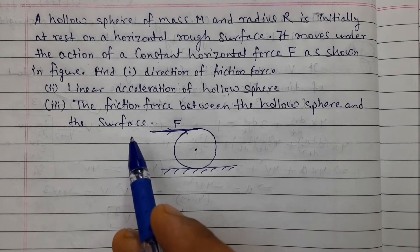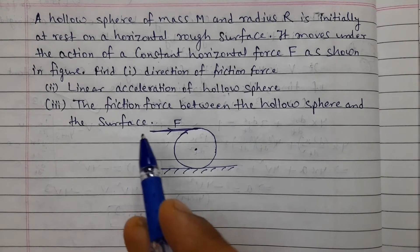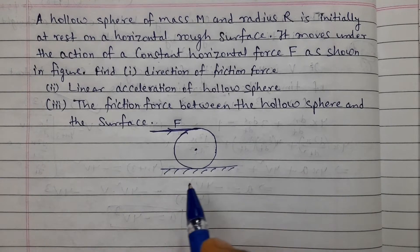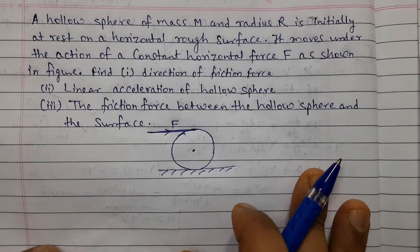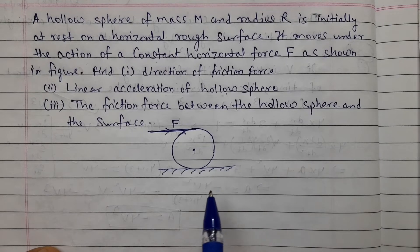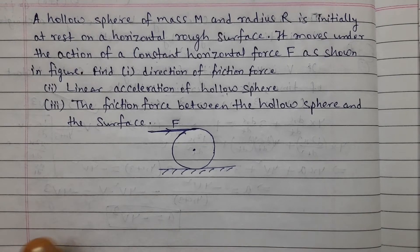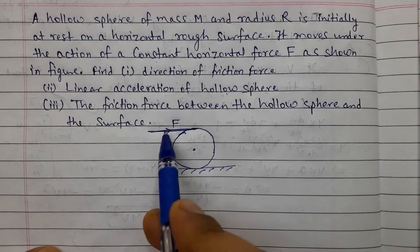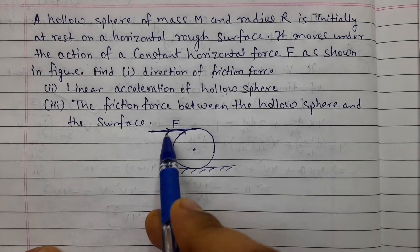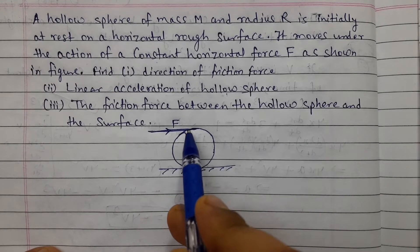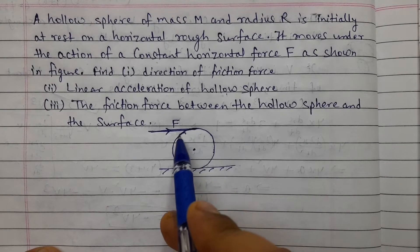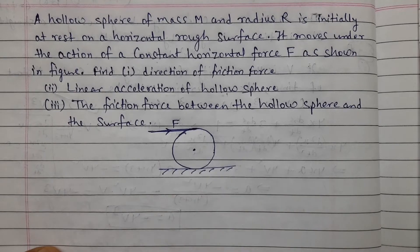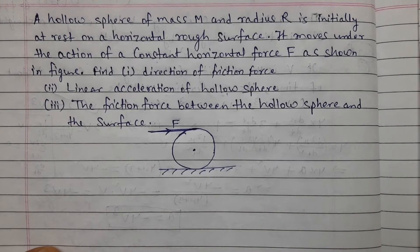The mass of the hollow sphere is capital M and the radius is capital R. Initially it is at rest on a horizontal rough surface, so there will be friction. So what will the friction force direction be? Let's analyze how we can solve it.